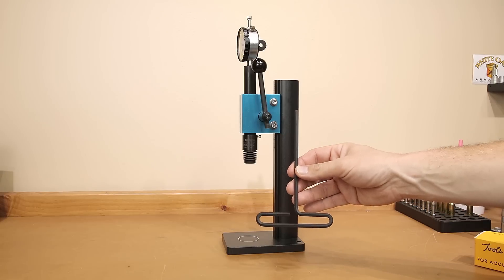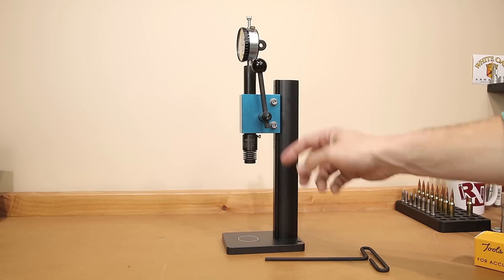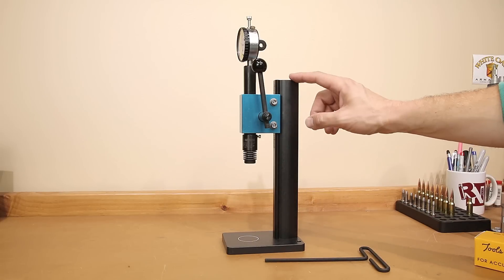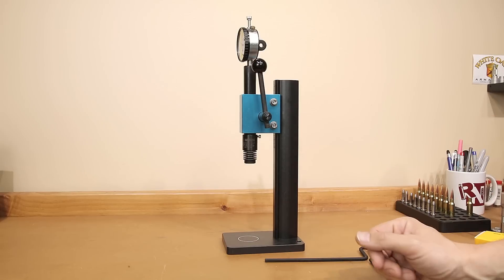Height adjustment is relatively easy with the included Allen wrench. Simply loosening these two screws with your Allen wrench allows you to move this up and down on the base to adjust it for the height that is needed.